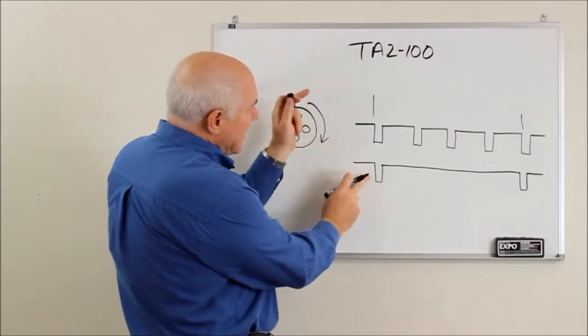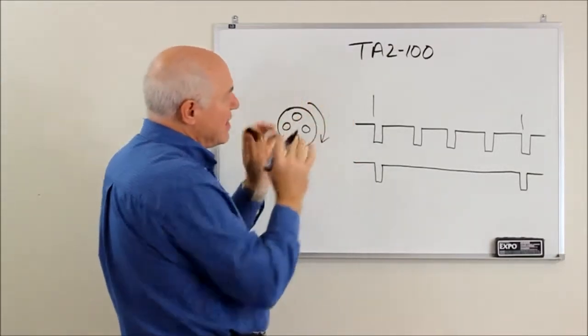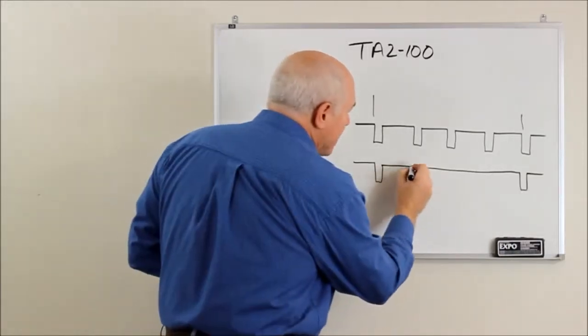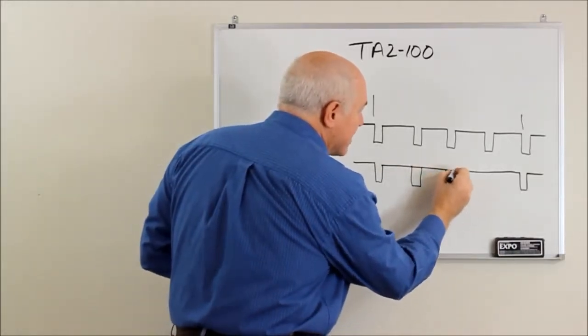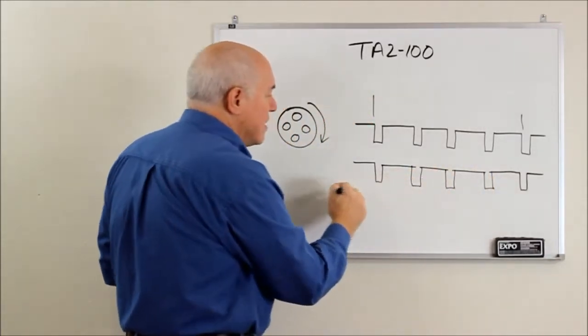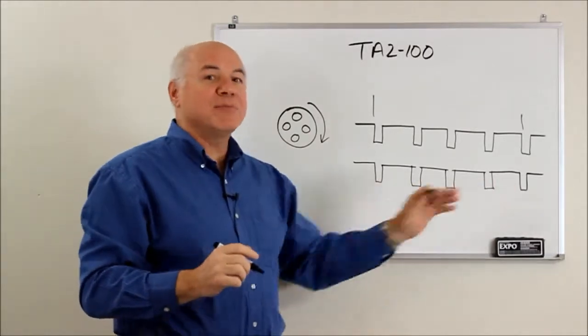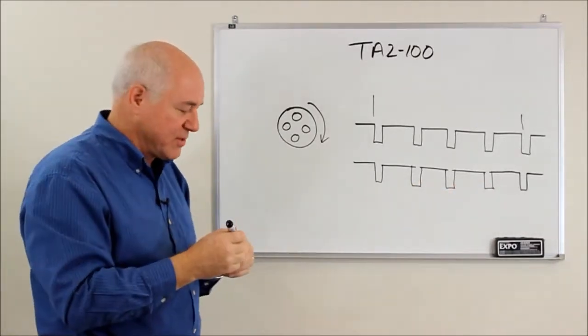So if we take this signal and input it to the TA2 and tell it to multiply by four, it'll output a signal like this. What comes in as a one cylinder rate signal gets bumped up by a factor of four to a four cylinder rate.